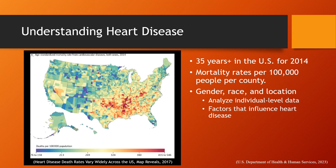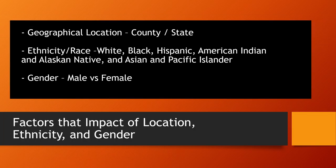Through our research, we hope to raise awareness of how these factors can influence an individual's susceptibility to heart disease and ultimately mortality outcomes. This research isn't just about the numbers — it's about people. It's about uncovering insights that can pave the way for targeted interventions and ultimately save lives. We want to investigate why some people are more likely to die from heart disease than others, and to do this, we'll look into three main factors.